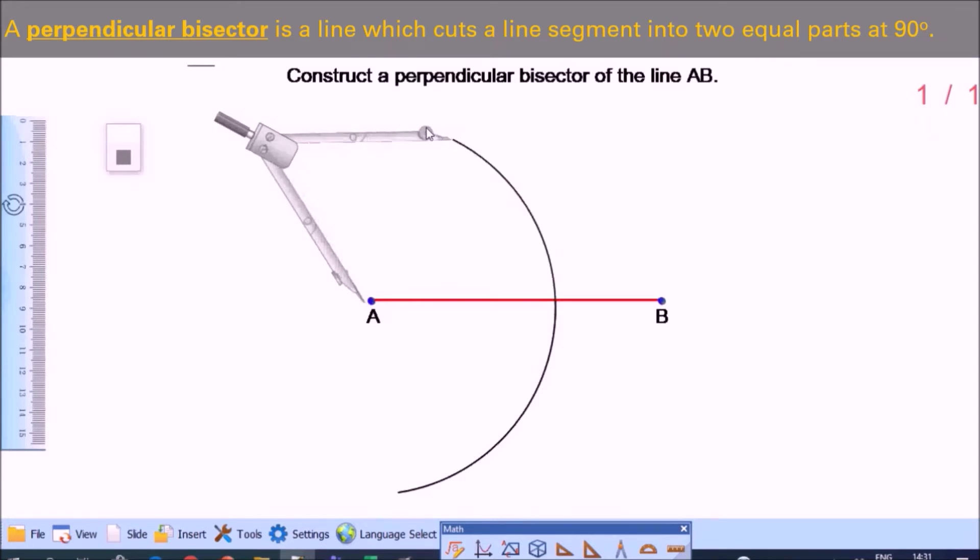Now, keeping the compass the same, place the compass point on B. Then draw a large arc intersecting the first arc that we have drawn. Do not change the opening of your compass. It's very important.